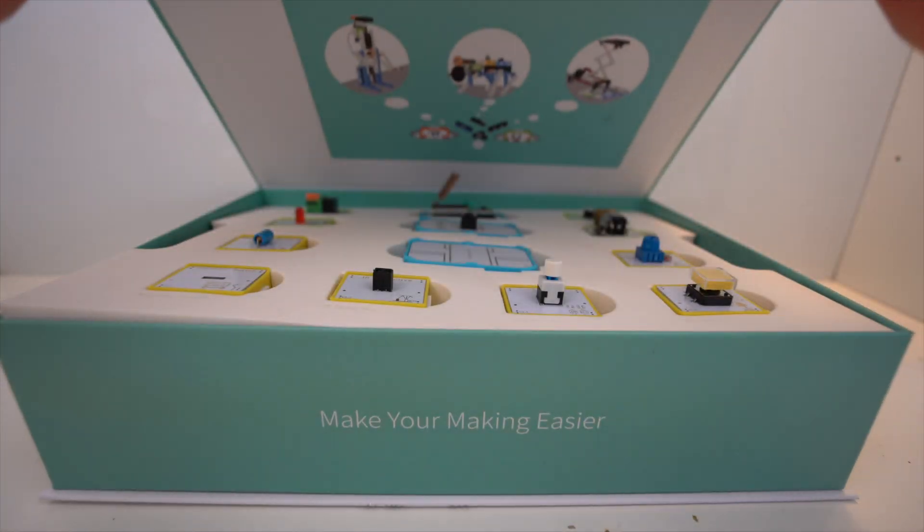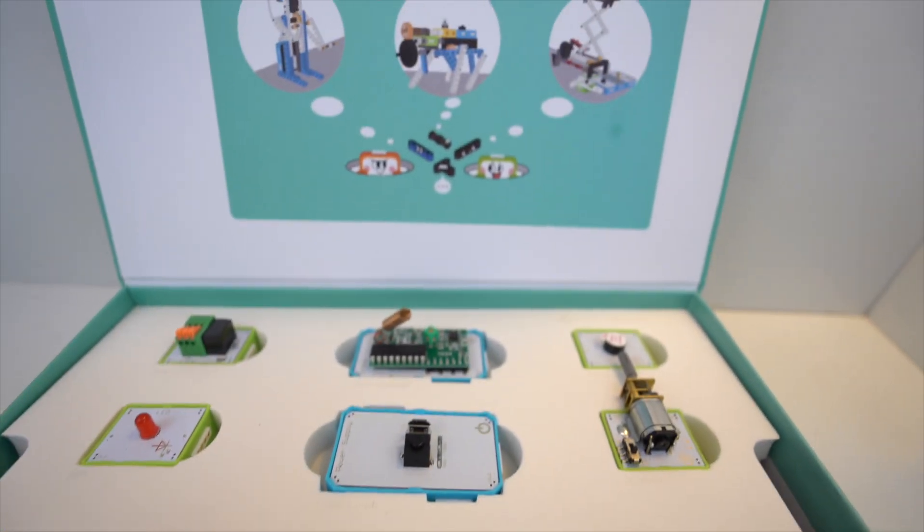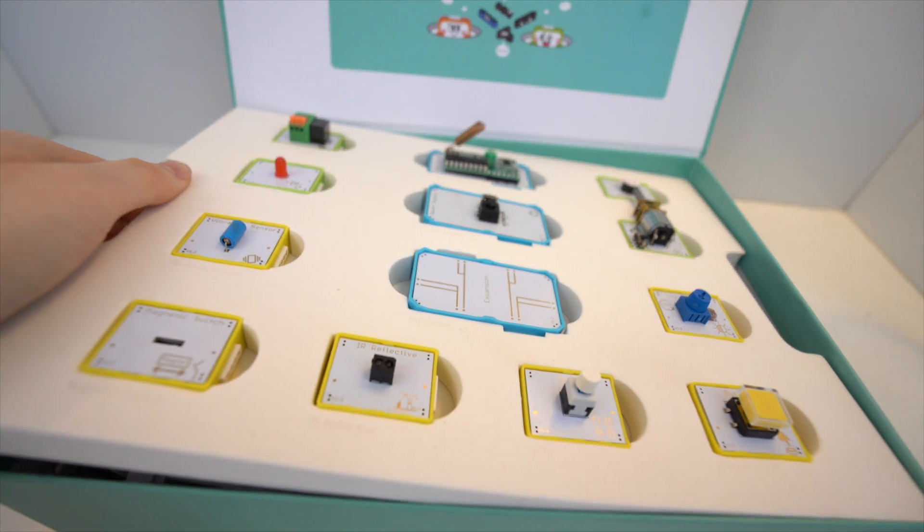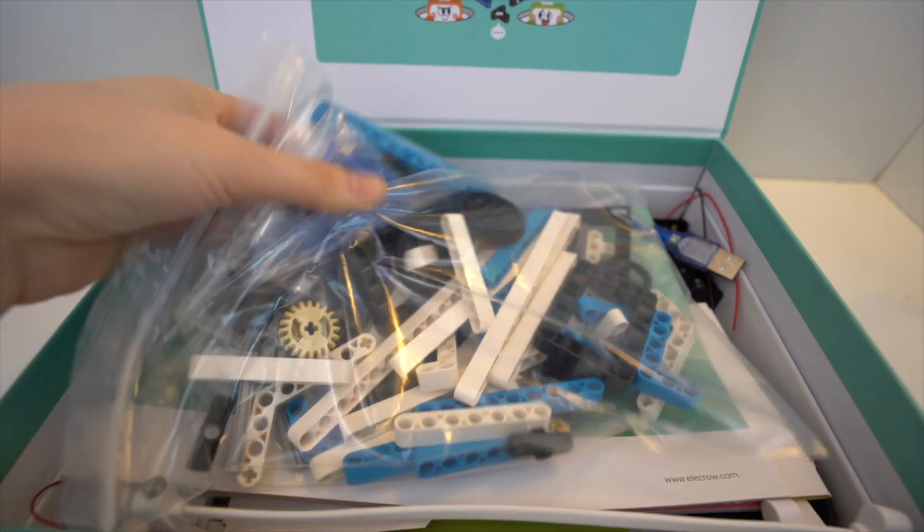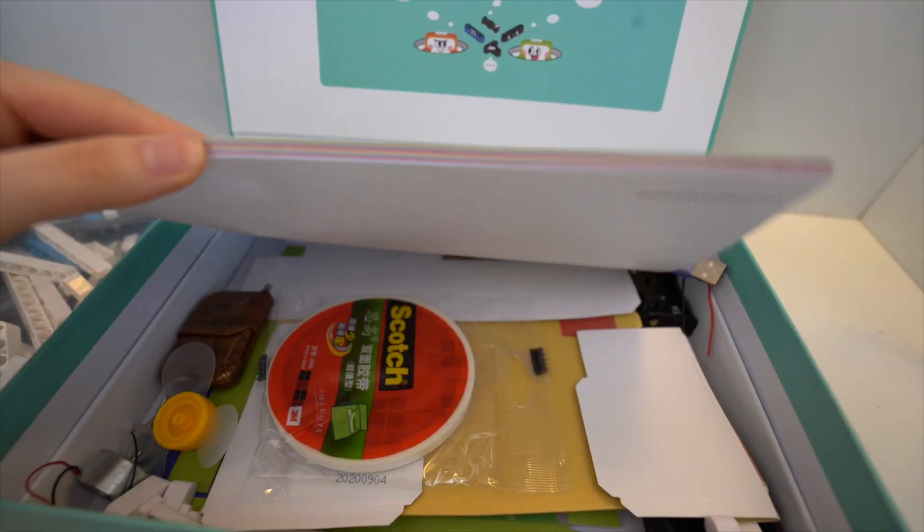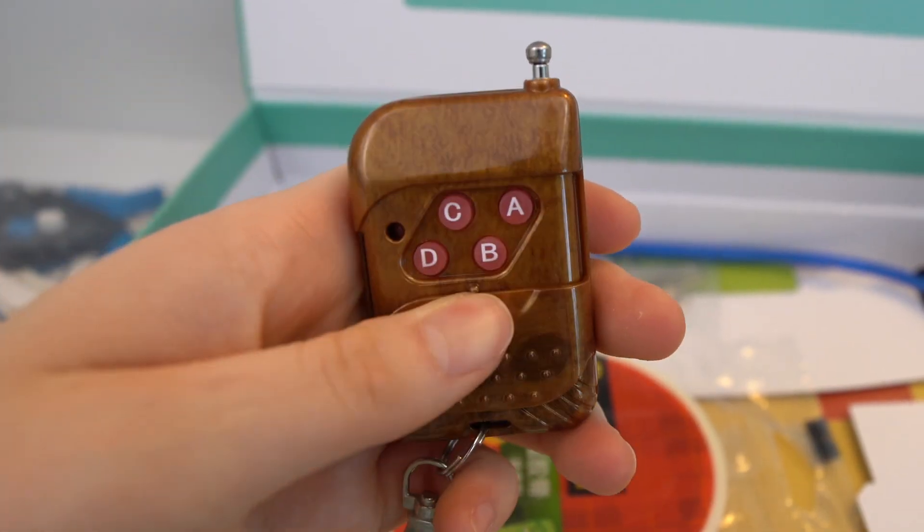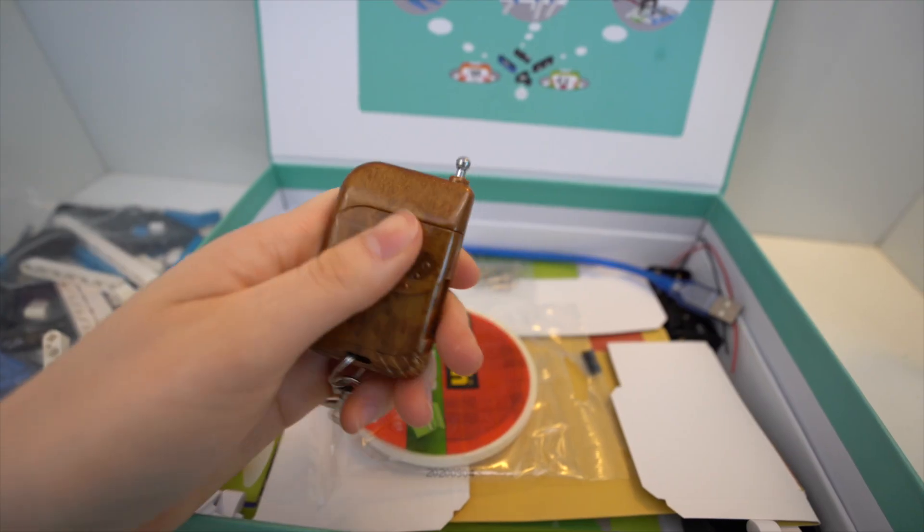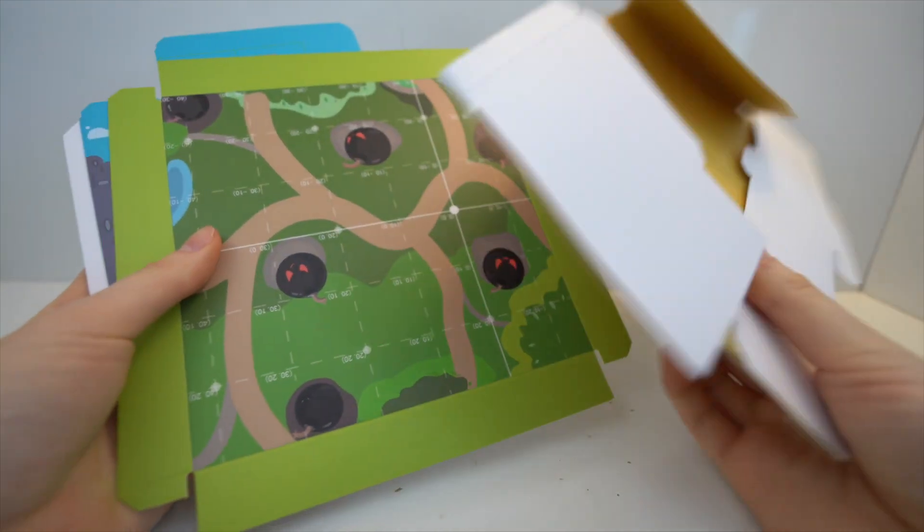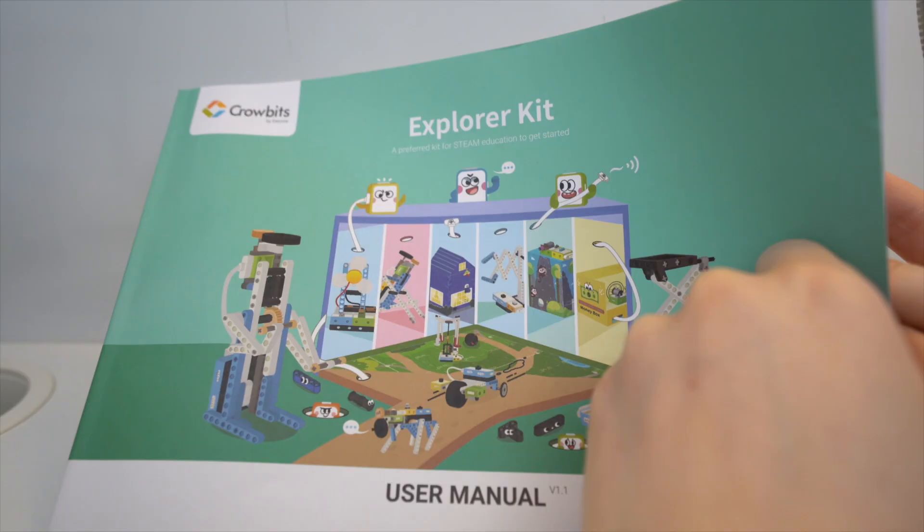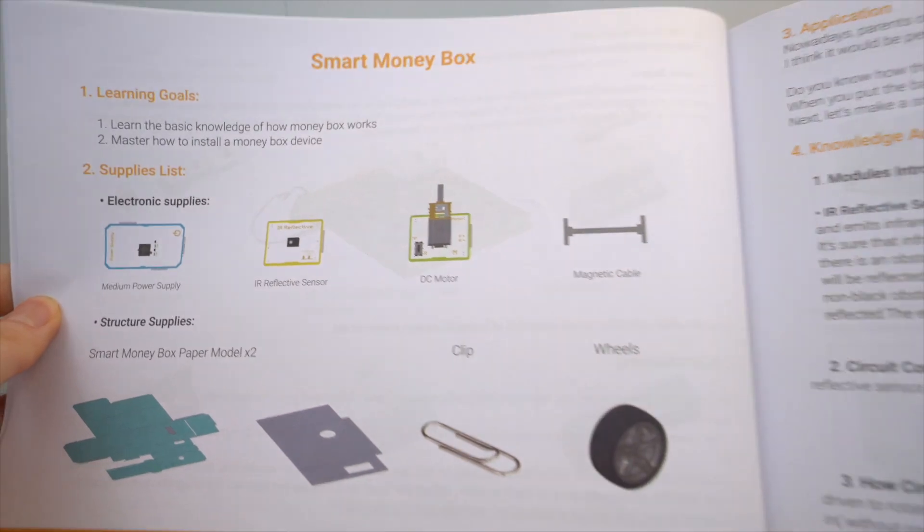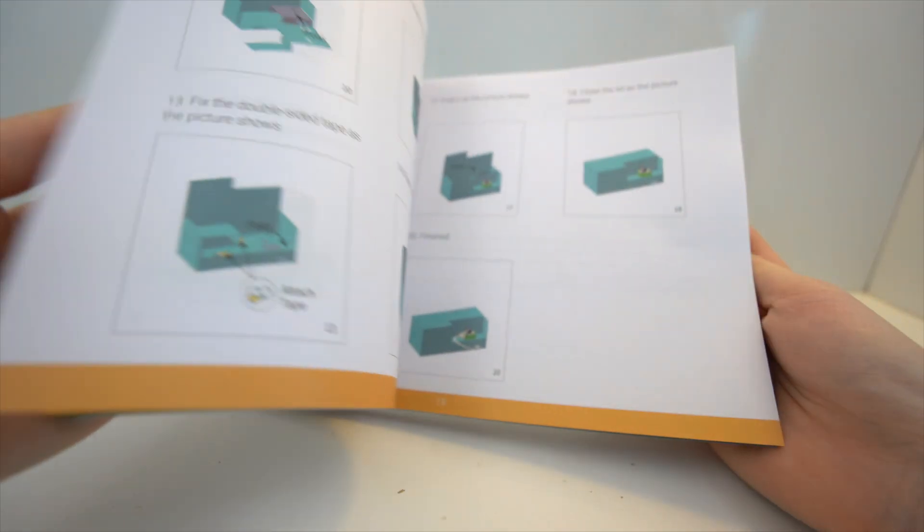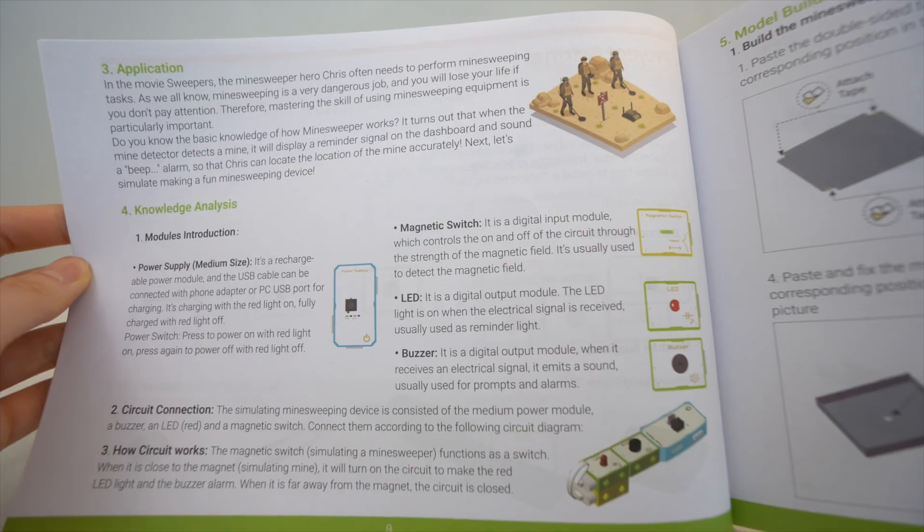This kit also comes with a lot of accessories. It also comes with these templates for the projects in the manual. One of my favorite projects that caught my eye is this smart money box.